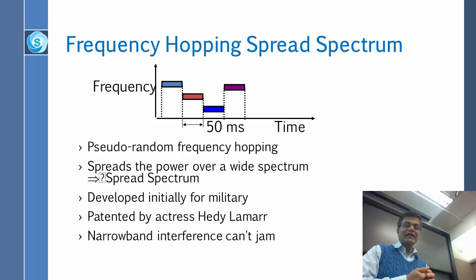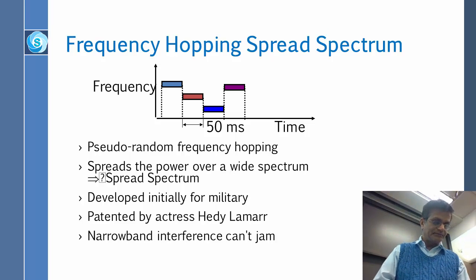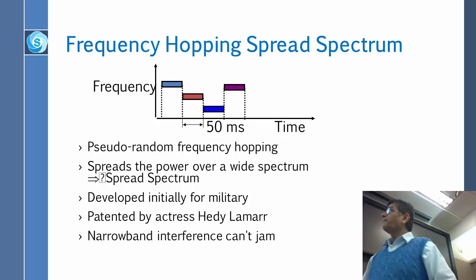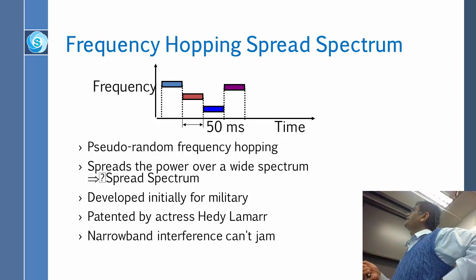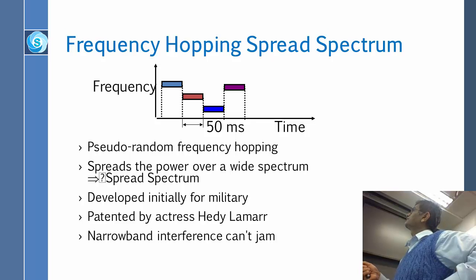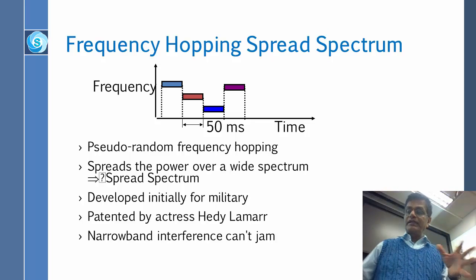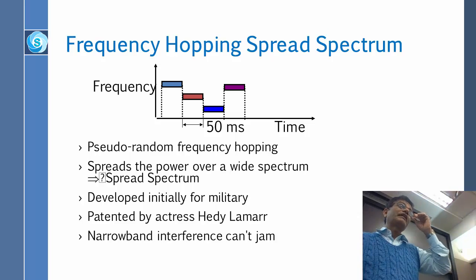One way to design a code is frequency hopping. Frequency hopping works as follows: I use this frequency for 50 milliseconds, and then I will change my frequency to this one for 50 milliseconds, and then to that one, to that one, to that one. And I am not going to do it in a sequential order — I am going to do it in a random order.